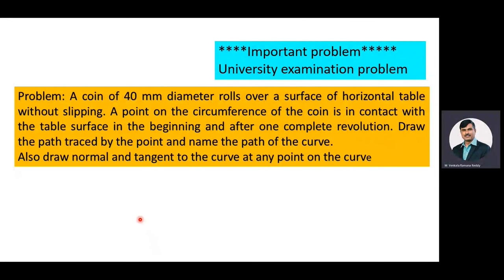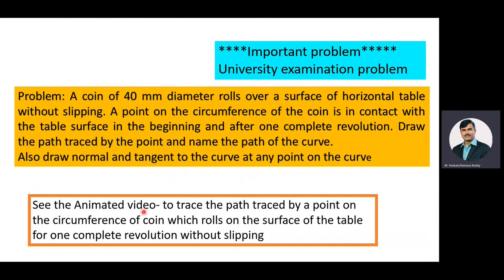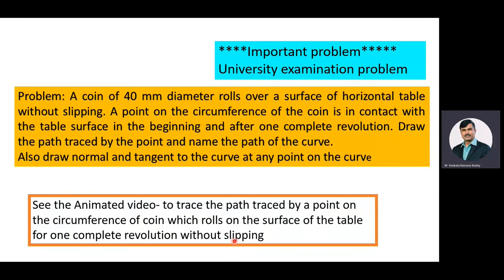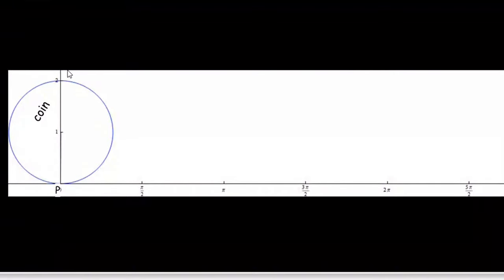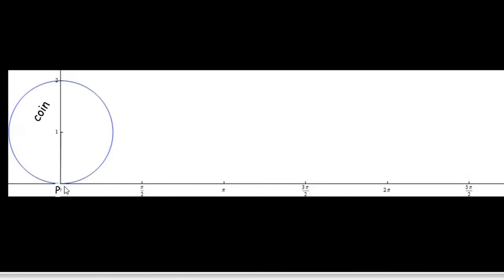To easily analyze the problem, we will see an animated video to trace the path of a point on the circumference of a coin which rolls on the surface of the table for one complete revolution without slipping. This is the coin rolling on the top of the dining table. Point P is on the circumference of the coin, and we will trace the movement of point P.